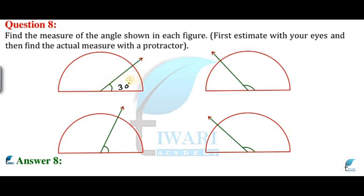If we talk about this angle, it is more than 90 degrees, and here it is 30 degrees, so this will be completely 120 degrees. If you measure it, it will be 120 degrees. This is completely a 60 degree angle and this is a 160 degree angle — you can measure it.